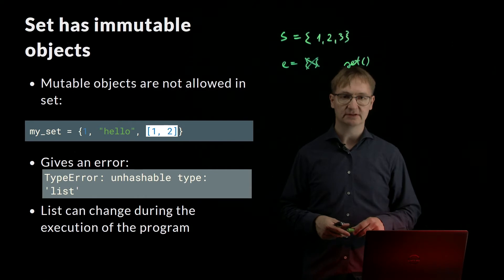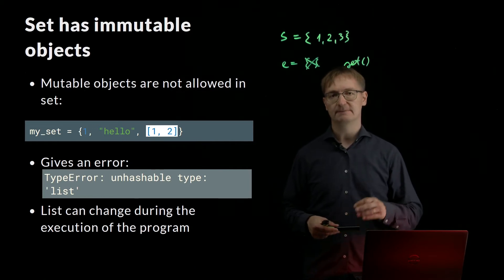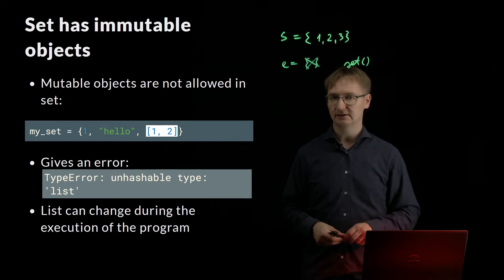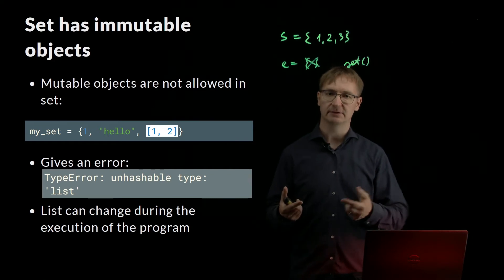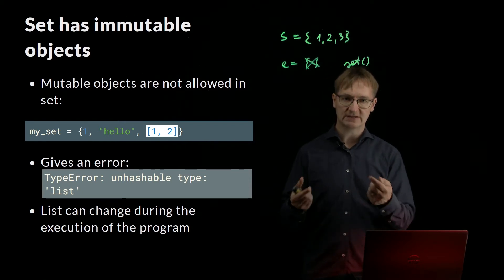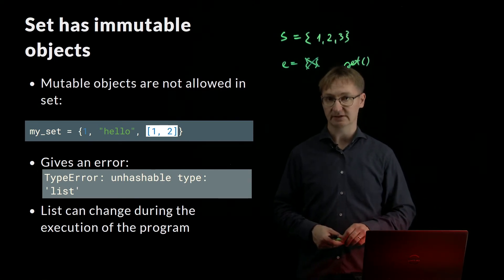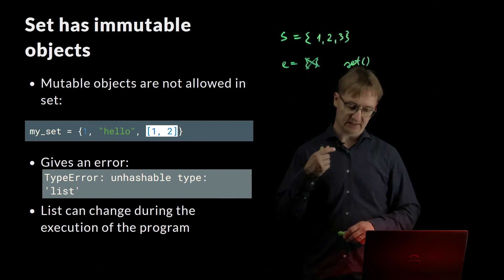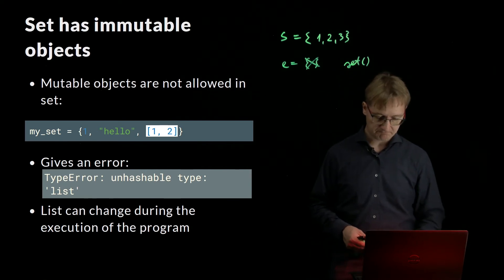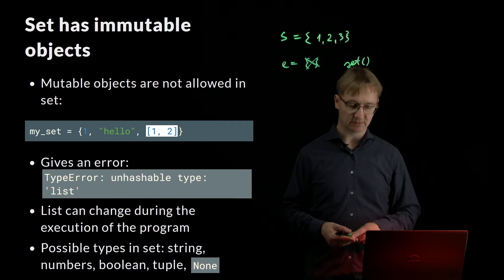The reason is that a list can change during the lifecycle of the program. If we allowed lists inside a SET and the lists were different at first, but during the program one list changed so the two became the same, the SET would end up with duplicate elements. That's why elements inside a SET can only be immutable. The possible types inside a SET are strings, numbers, booleans, tuples, and None.